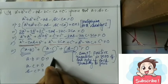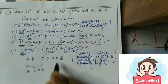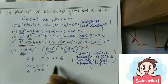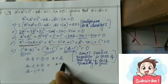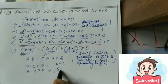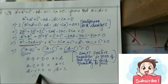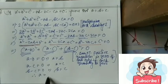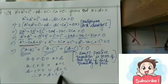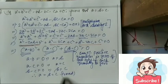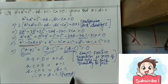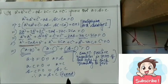Therefore, a equals b, a equals c, and b equals c. Therefore, a equals b equals c. Proved.